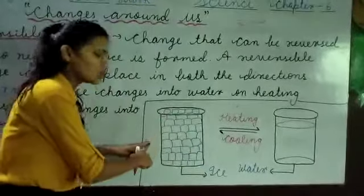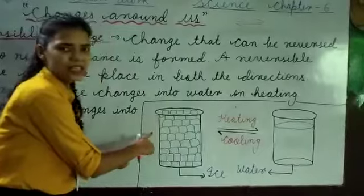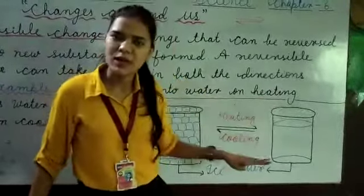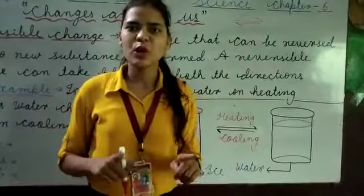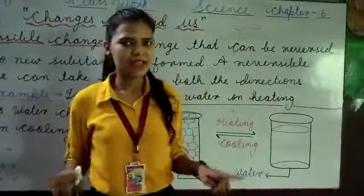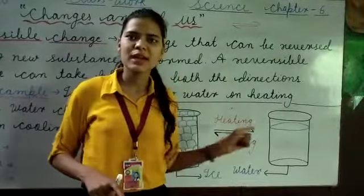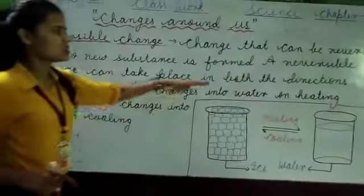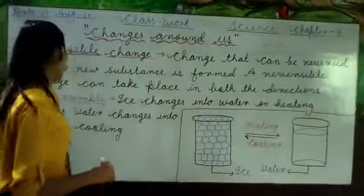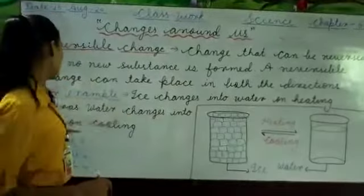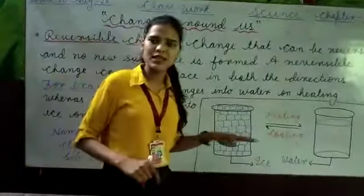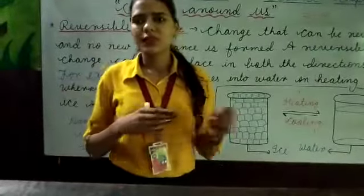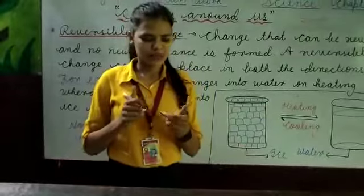It was only water. It was in the solid state — ice. Then it was converted into the liquid state. The state is changed, but it has a water molecule, H2O molecule — no new substance. So we can say that it is a reversible change. The example is: ice changes into water on heating, whereas water changes into ice on cooling. Water can be converted into ice and ice can be converted into water. So this is a reversible change.